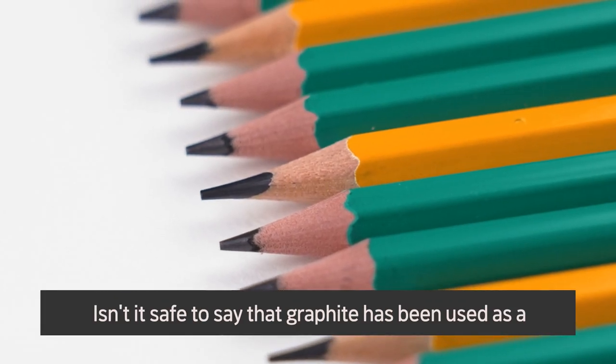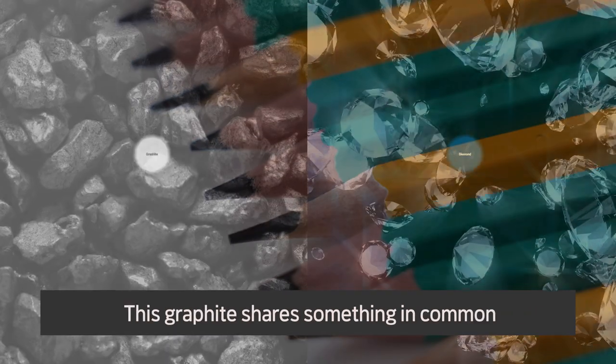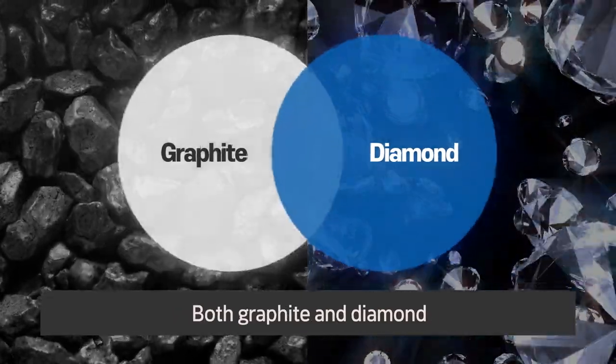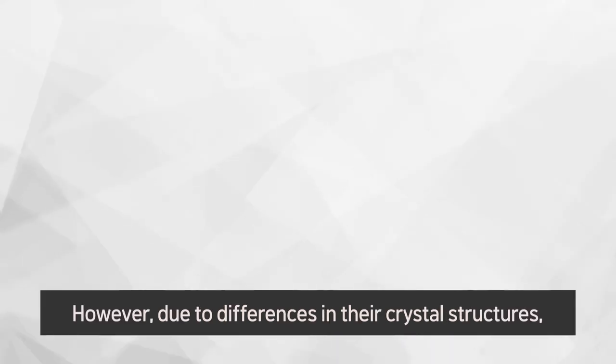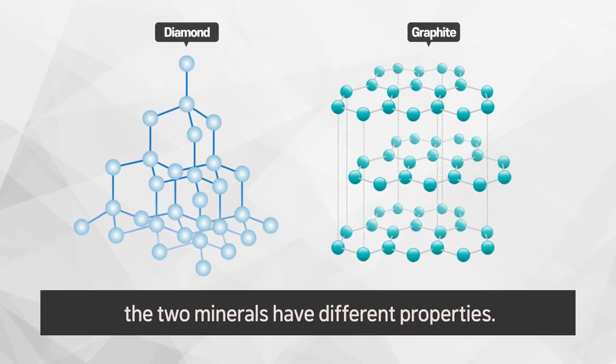Isn't it safe to say that graphite has been used as a writing tool since ancient times? This graphite shares something in common with the costly gem diamond. Both graphite and diamond are entirely carbon-based. However, due to differences in their crystal structures, the two minerals have different properties.